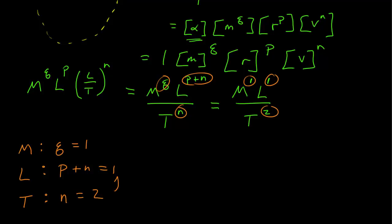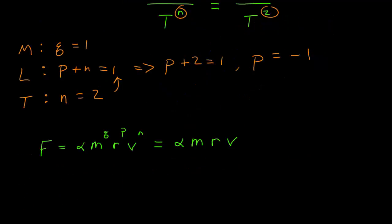So q is 1, n is 2. And if I put n into the above, I get p plus 2 equals 1, or p is equal to negative 1. Now I go back to my original problem,